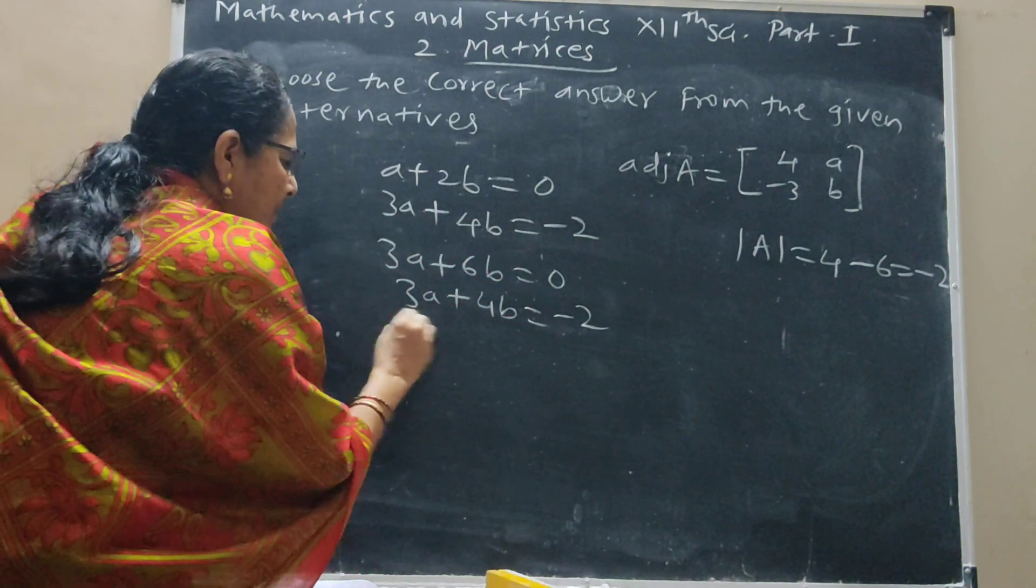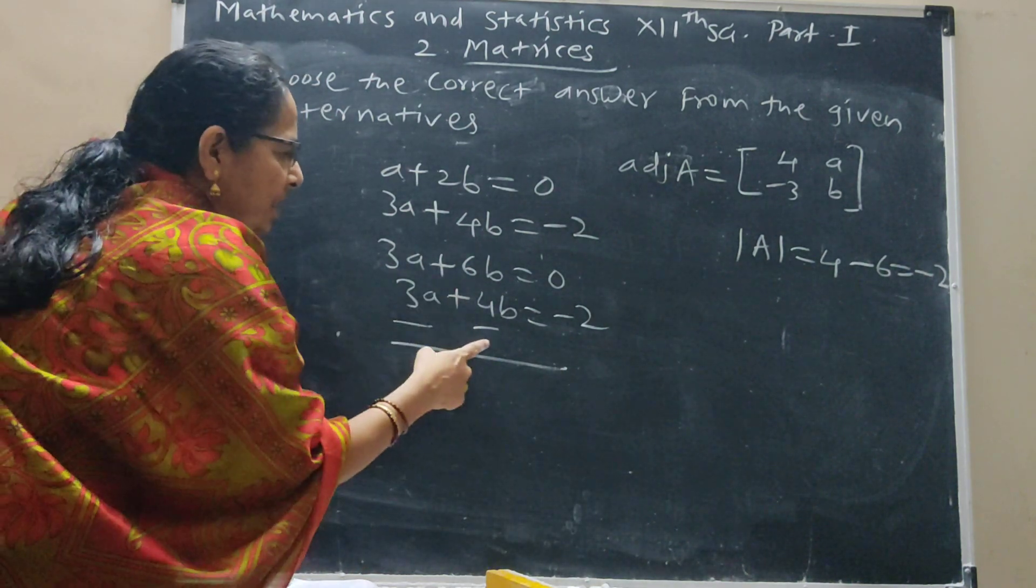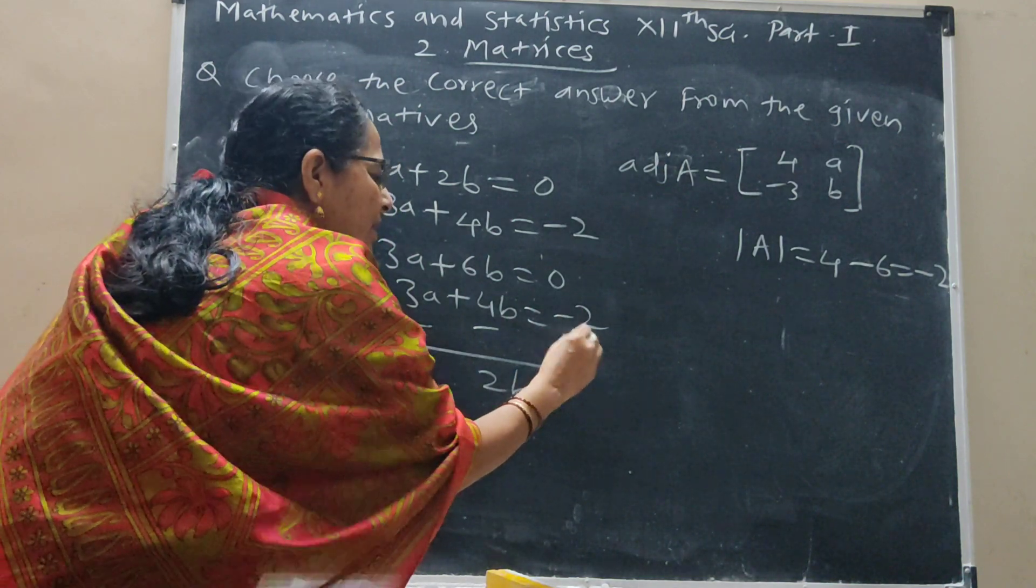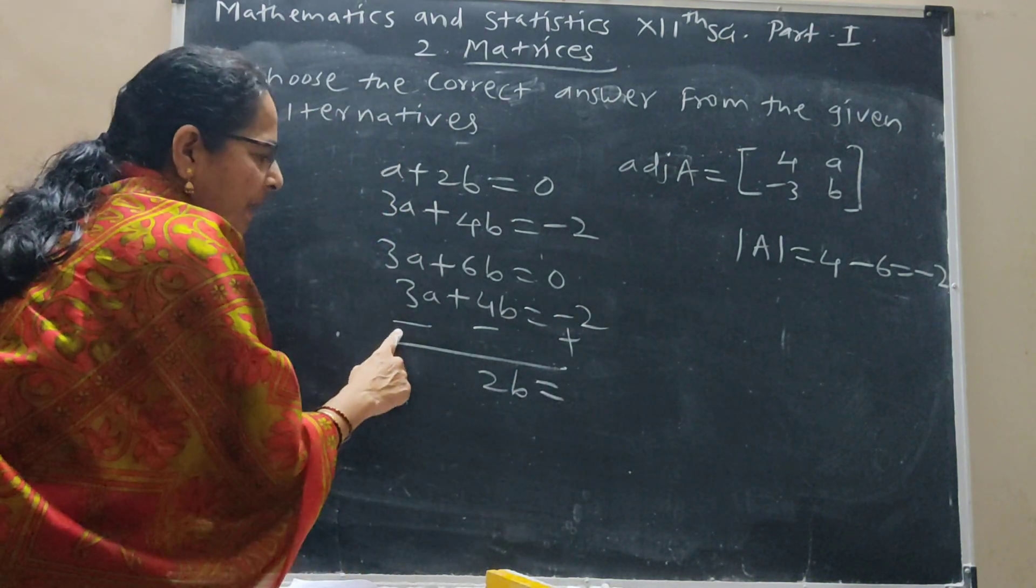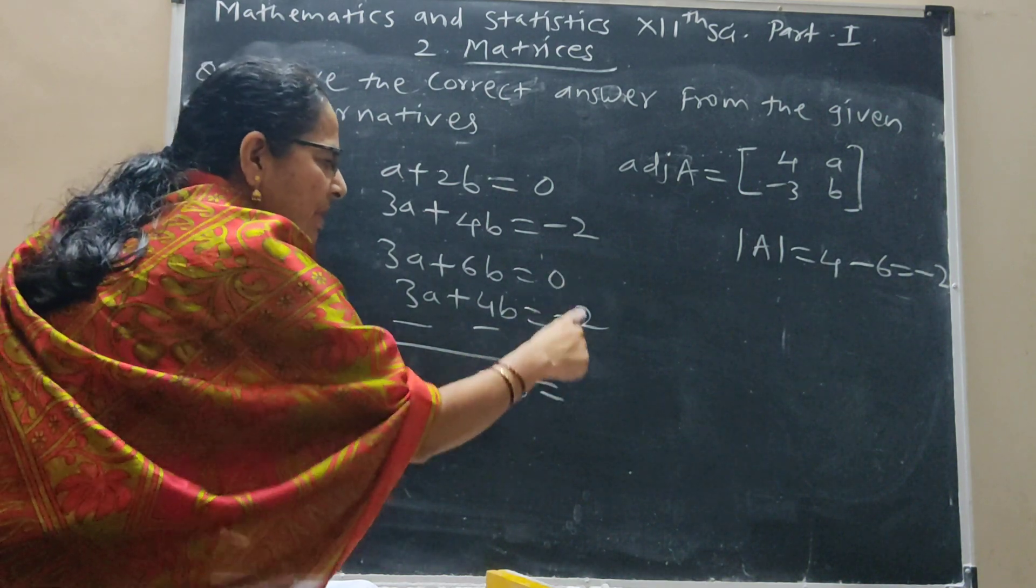Change the signs. Now this 3A minus 3A cancels. 6B minus 4B, 2B is equal to here. Change the sign, here is plus, here is minus, here is minus, here is plus. So this side is 2.